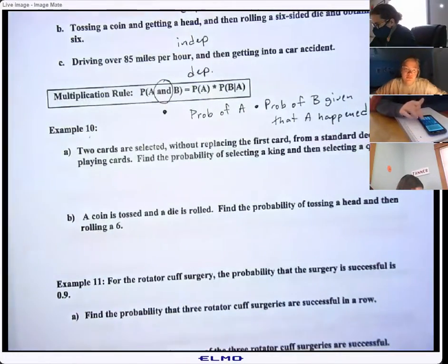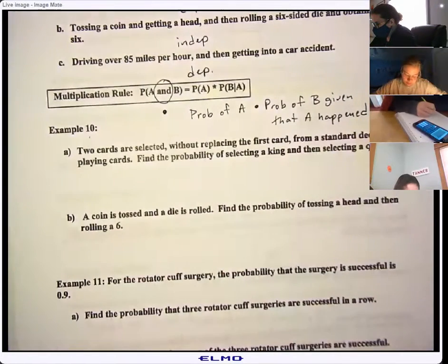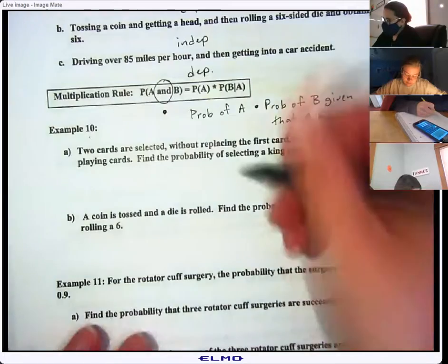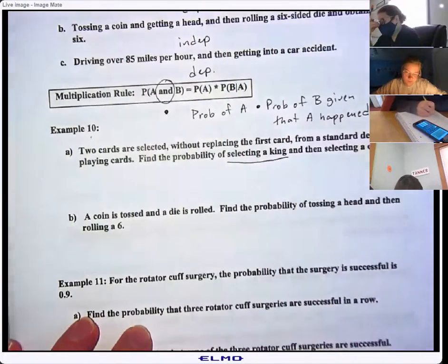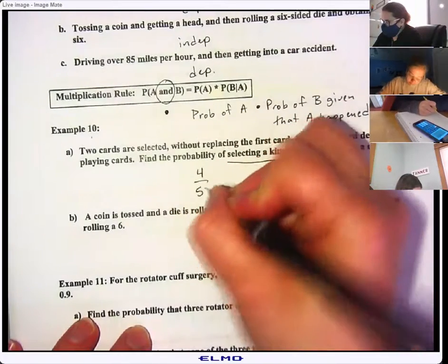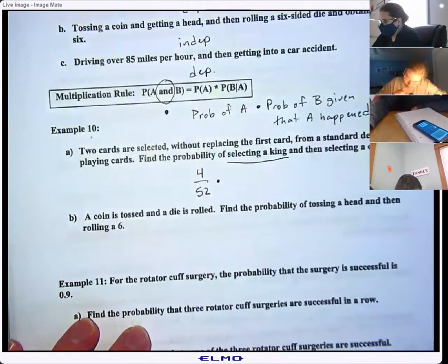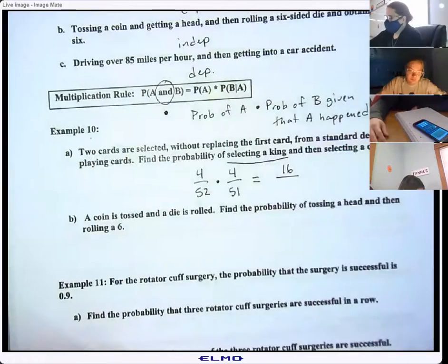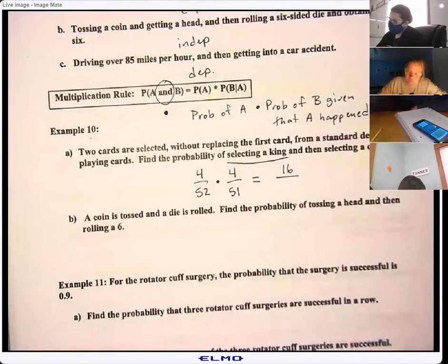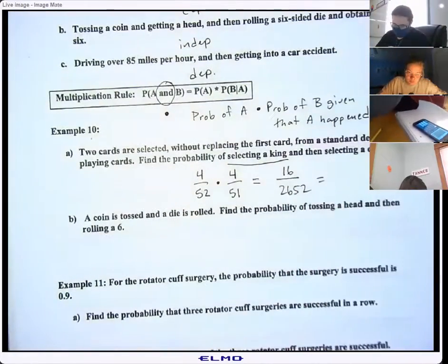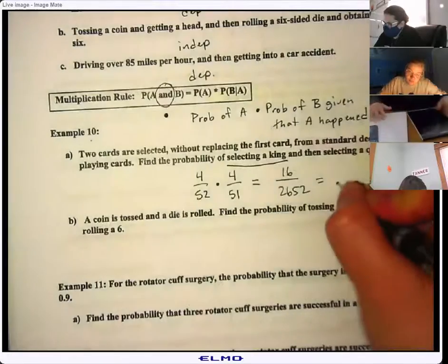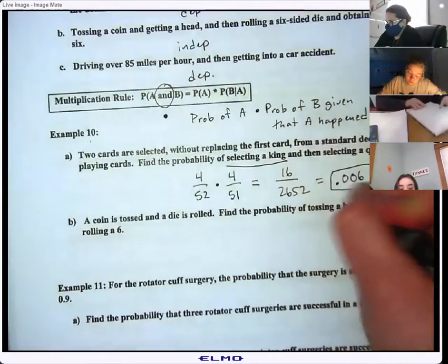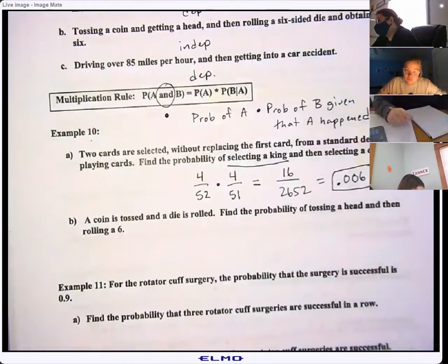For example, selecting a card without replacing the first card from a standard deck, find the probability of selecting a king and then selecting a queen. Okay, so first we select a king, what's the probability of selecting a king? Just talk to me guys. Four out of 52. And then what's the probability then of selecting a queen? Right, four out of 51 because we have one less card in the deck, which is the same thing as 0.006. By the way, on the AP test they always want you to round all of your probabilities to the third digit. They like decimals or fractions, your choice. It has to be a reduced fraction or a decimal to the third place.